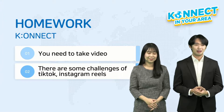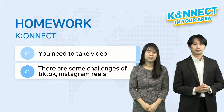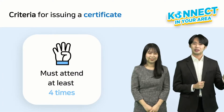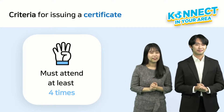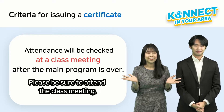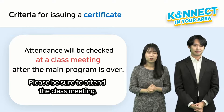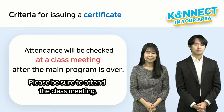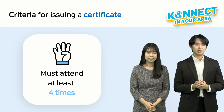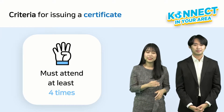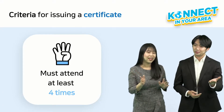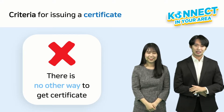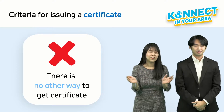What are the benefits of attending this program? Students who diligently attend will receive a certificate of completion. However, there are criteria: you must attend the program at least four times, and attendance will be checked at the class meeting after the main program by the class president. Please be sure to attend class meetings. If you attend only the main program and miss class meetings, your attendance will not be counted. To get a certificate, attend more than four times — please attend not only the main program but also the class meeting. Don't forget!